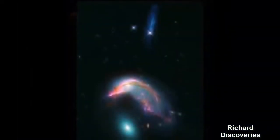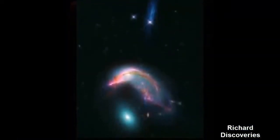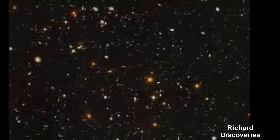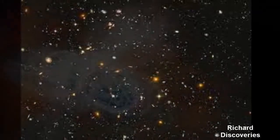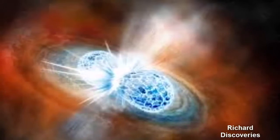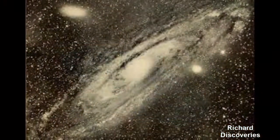The exomoon, which is a satellite that orbits a planet outside our solar system, appears to be revolving around the Jupiter-sized gas giant Kepler 1625 B. The exomoon itself is believed to be around the size of Neptune, which is about four times bigger than Earth.